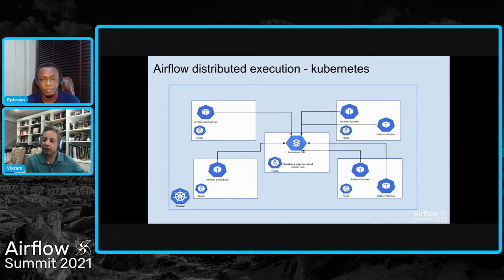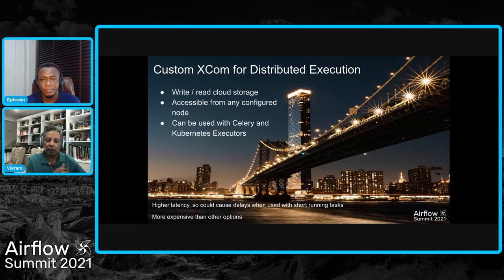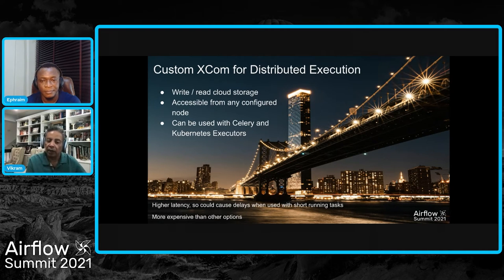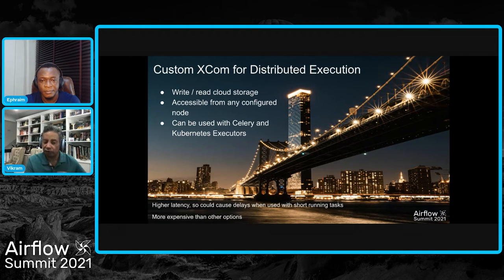The local file system is not the right approach for distributed execution. The most commonly asked-about option is cloud storage: the advantage is that any configured node on the distributed network can read and write from it, and it works with both Celery and Kubernetes executors. The caveat is that because it is away from the nodes on a cloud system, there could be higher latency, especially with short-running tasks, and it is more expensive. But it is a very reasonable option for distributed execution when you need to share data across many different nodes.